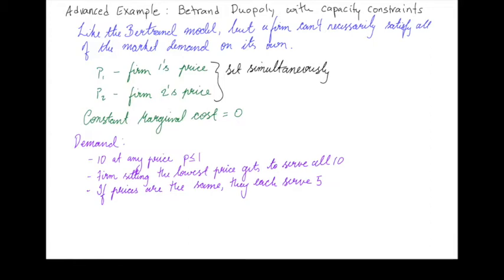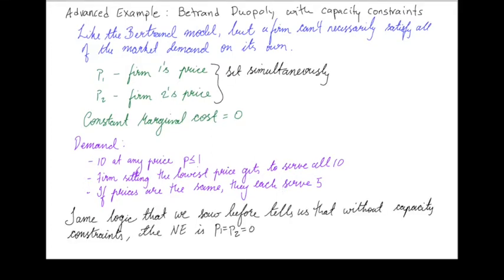We're going to assume a very simple demand behavior. At any price less than or equal to 1, demand is 10 units. The firm setting the lower price, if they have different prices, gets to serve all 10, and if they set the same price, they both serve 5. Following the logic from last time when we analyzed the Bertrand model, we'd still conclude that both firms set their price equal to marginal cost, which is 0.